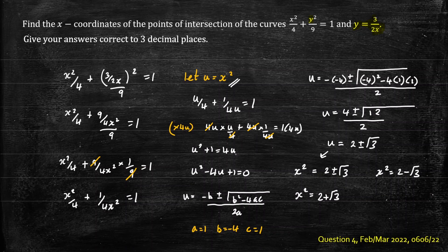If we take the square root of both sides x will be equal to plus or minus the square root of 2 plus root 3.